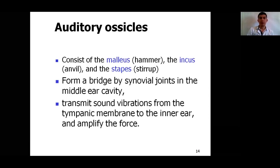The auditory ossicles are three small bones within the middle ear. Their names are the malleus (meaning hammer), the incus (meaning anvil), and the stapes (meaning stirrup). These bones form a bridge connected by synovial joints — between the malleus and incus, and between the incus and stapes. The ossicles transmit sound vibrations from the tympanic membrane to the inner ear and amplify the force.